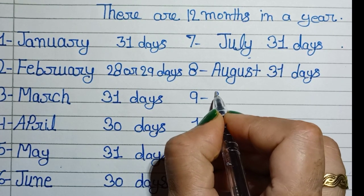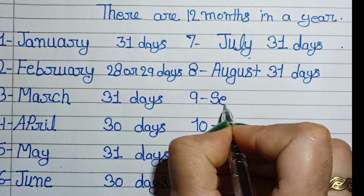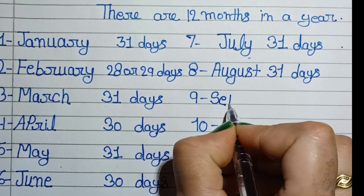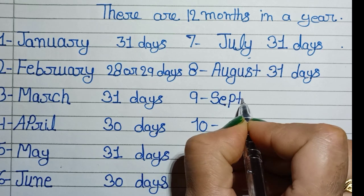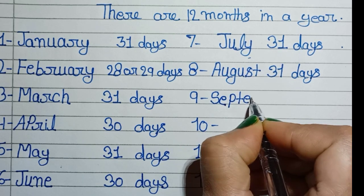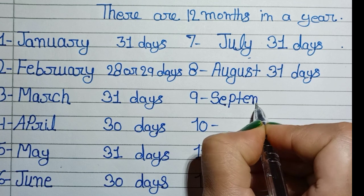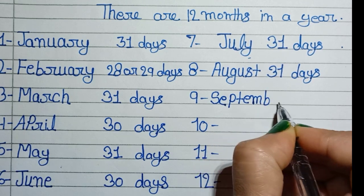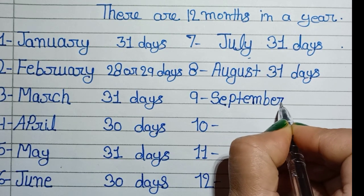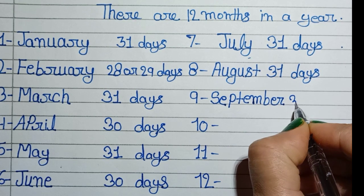September. S, E, P, T, E, M, B, E, R. September, 30 days.